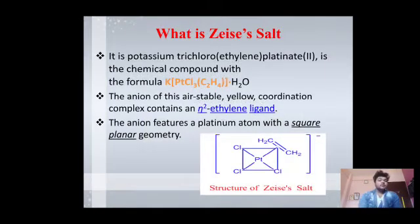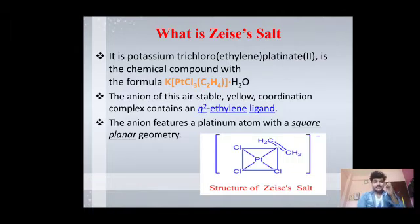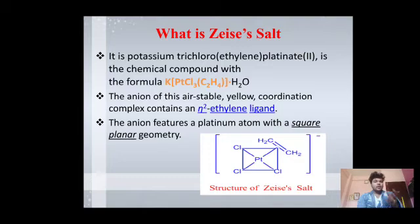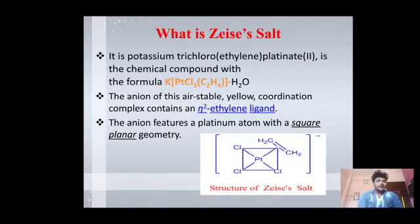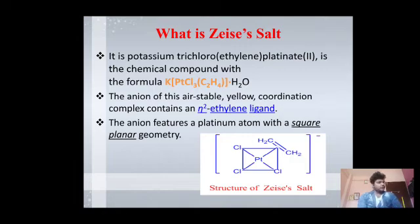Zeise's salt is potassium trichloroethylene platinate. As its name suggests, there are three chlorines which work as ligands, one ethylene which also works as a ligand, and platinum is the central metal ion. Potassium is outside the square bracket and works as a cation, while trichloroplatinate and one ethylene work as the anion. The anion is stable in air. The notation eta-raised-to-two indicates that two carbons from ethylene are directly attached to the metal. The geometry is square planar.